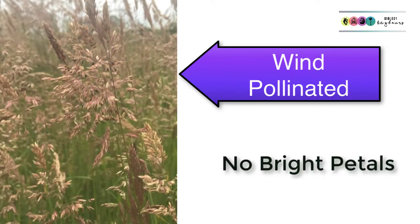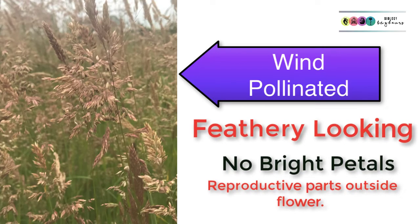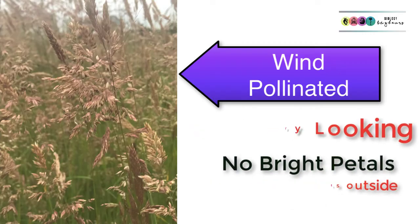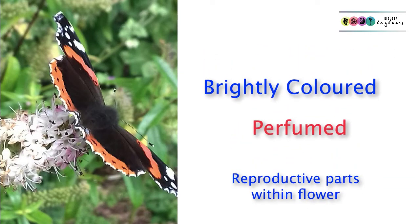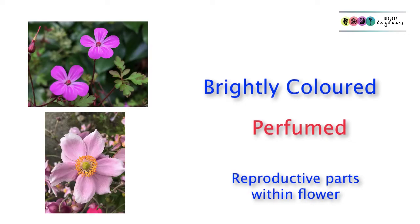Some flowers rely on the wind to carry the pollen, so they are wind pollinated. They are often feathery looking, don't have bright colored petals, and the reproductive parts hang on the outside of these flowers. Grass would be a good example of a wind pollinated plant. Some flowers depend on animals for pollination. These flowers are usually brightly colored, have a nice perfume, and the reproductive parts are found within the flower.